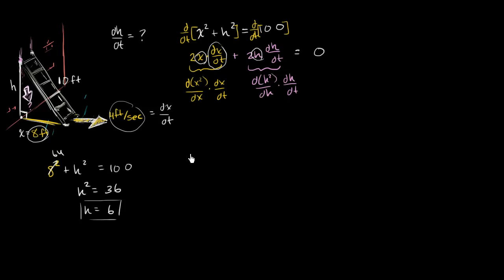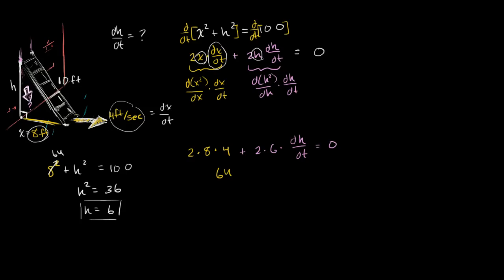So we get 2 times 8 feet times 4 feet per second, plus 2 times 6 times dh/dt, is equal to 0. That gives us 64 + 12·(dh/dt) = 0. We can subtract 64 from both sides to get 12·(dh/dt) = −64.